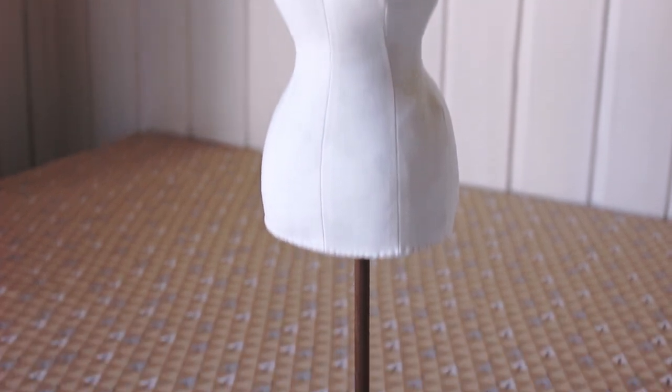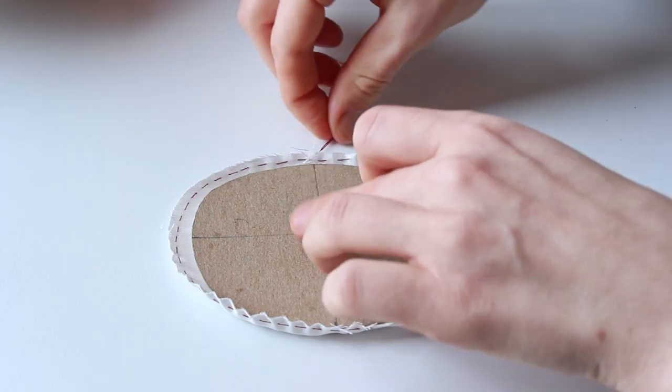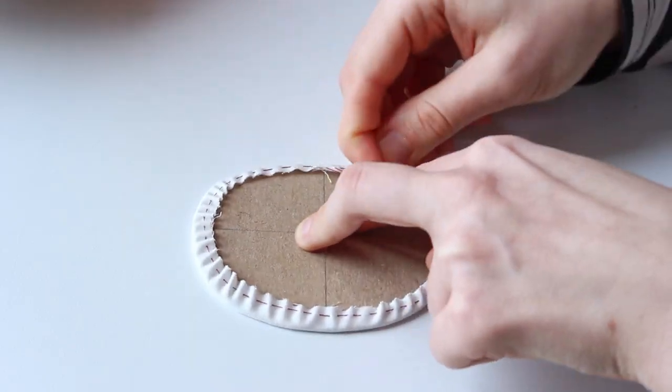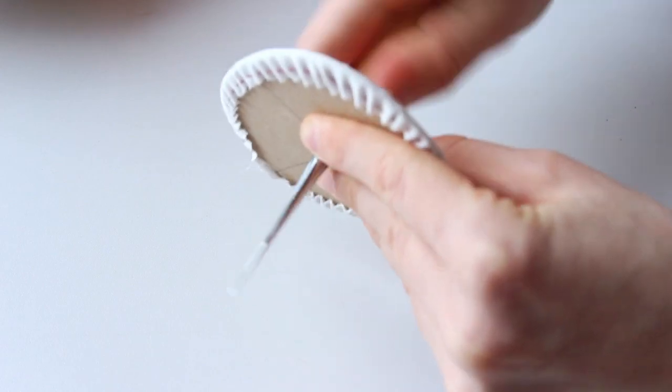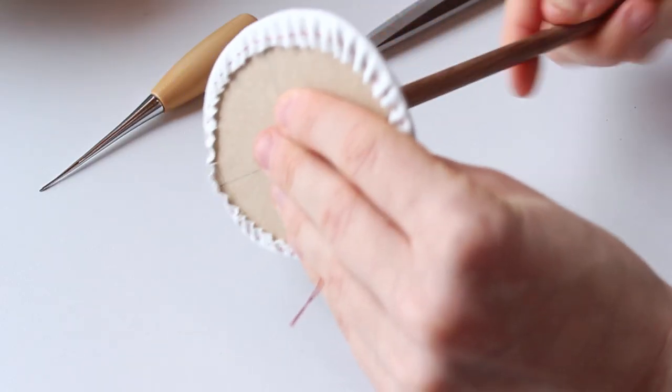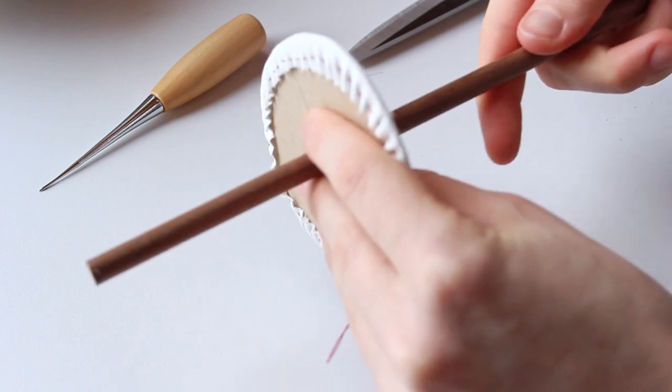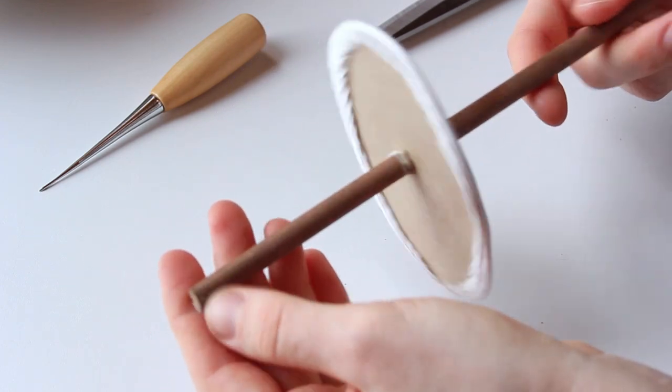And now, let's see how to make a dress form with a stand. After you've covered the base with fabric, poke a hole in the fabric as well and insert the wooden dowel into the hole. You can find the measurements for the dowel in your PDF instruction.